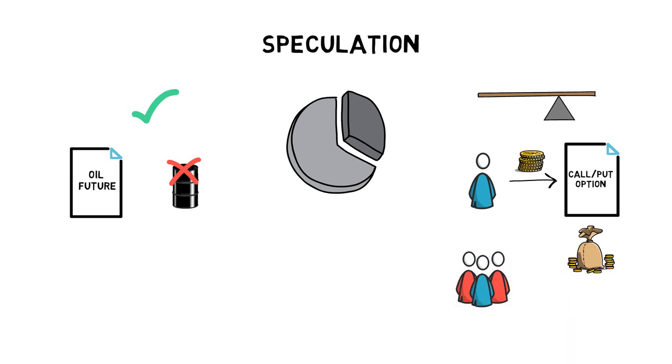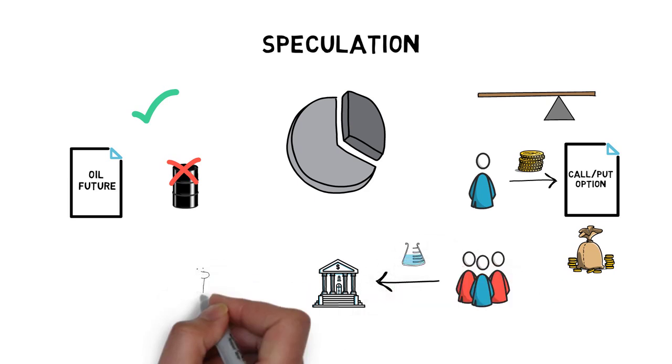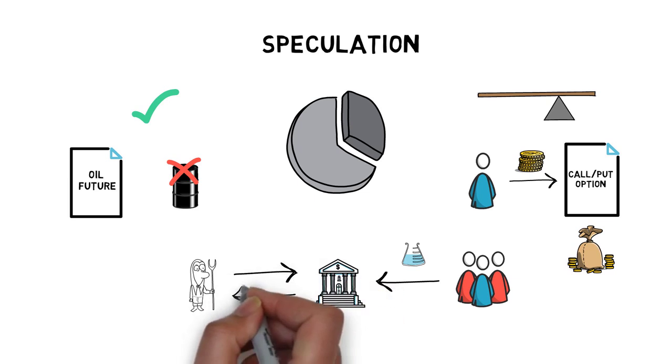Speculators are important market participants as they provide liquidity to the market and allow people who actually need to buy a particular derivative to hedge the risk to easily enter and exit the market.